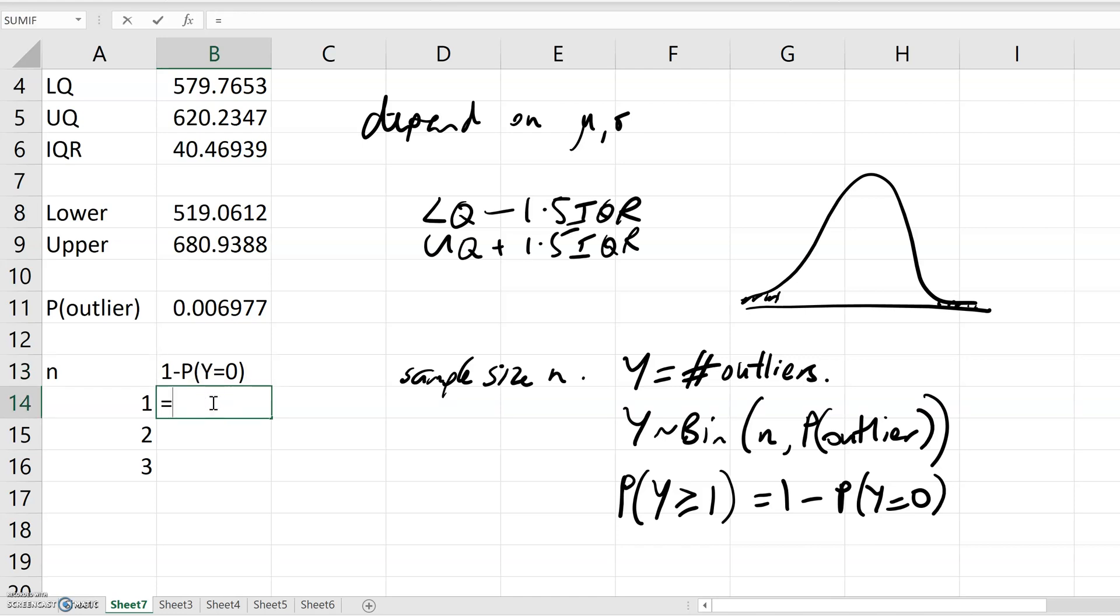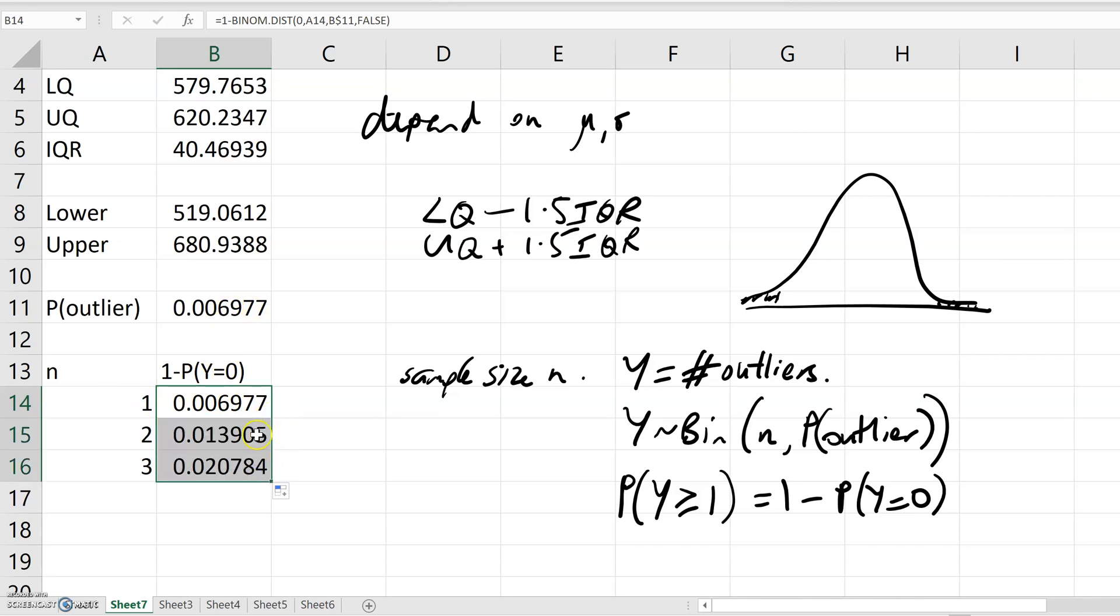So I use the function binom.dist. Number of successes: 0. Number of trials: I'll point at this parameter n. Probability of success: I'll point at the probability of outlier, and cumulative is false. I want to lock in that probability. So the probability of at least one outlier in a sample of 1 is just the same. If I copy that down, the probability of at least one outlier goes up.